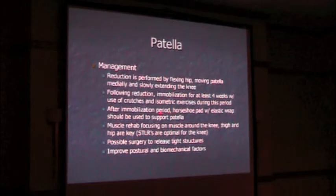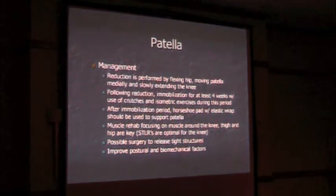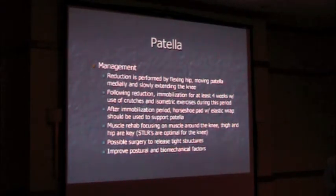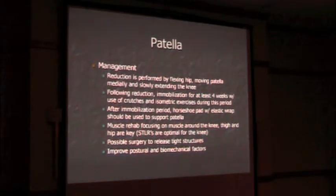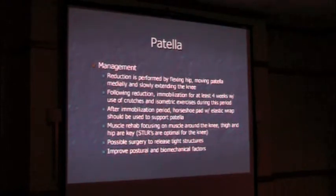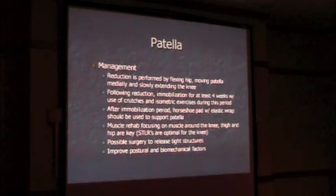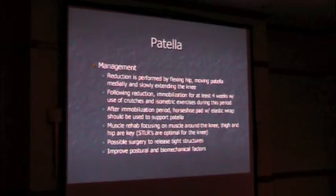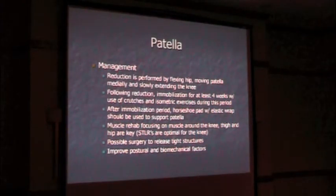After the immobilization period, if you have a primary or acute dislocation, you can put them in a horseshoe pad brace with elastic wrap — also called a lateral J brace — which holds that kneecap in position. Rehab focuses on the muscles around the knee to help stabilize the kneecap. Sometimes surgery is needed to release tight structures on the lateral aspect and tighten up the medial aspect, but that would require patient evaluation.